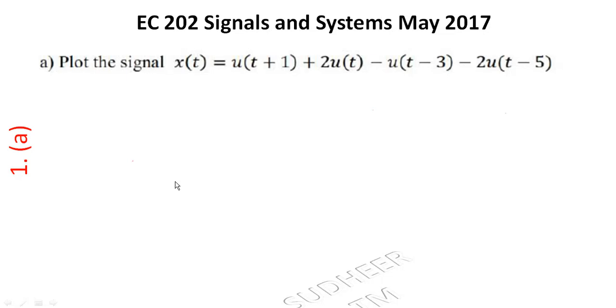Plot the signal x(t) = u(t+1) + 2u(t) - u(t-3) - 2u(t-5). We need to plot this signal.